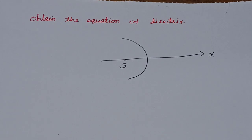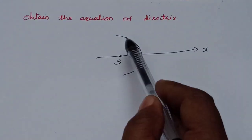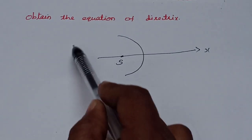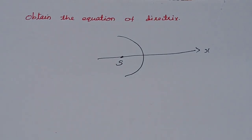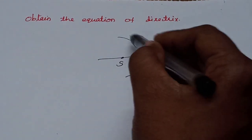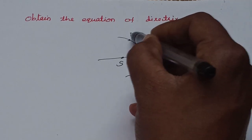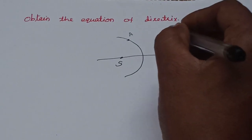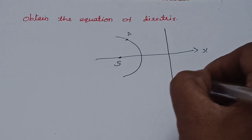I am going to define a conic. If you have a parabola or a hyperbola, you can have a branch. If you have an ellipse, you can have a few parts. If you have a fixed point, we will call it the focus. If you have a moving point and a fixed line, we will call that fixed line the directrix.